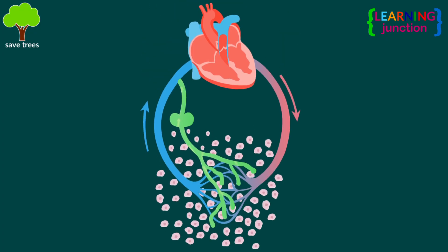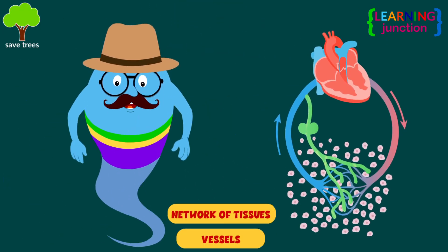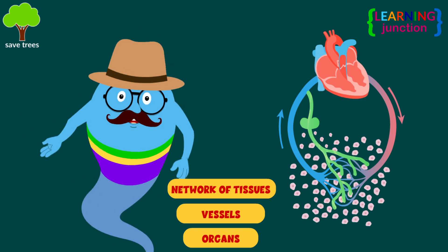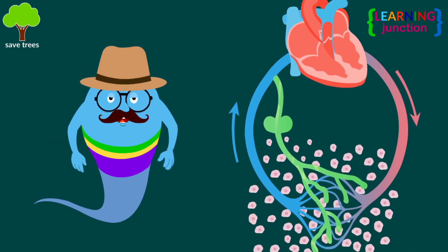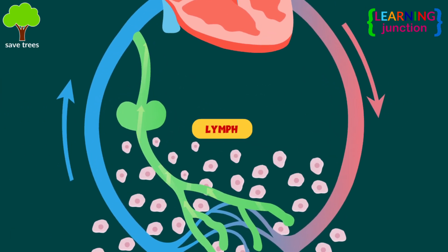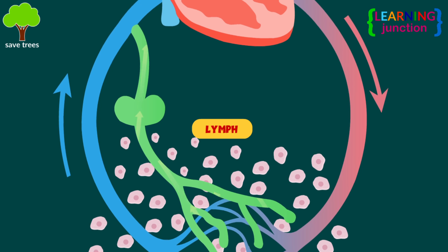The lymphatic system is a network of tissues, vessels, and organs that work together to move a colorless, watery fluid called lymph back into your bloodstream.